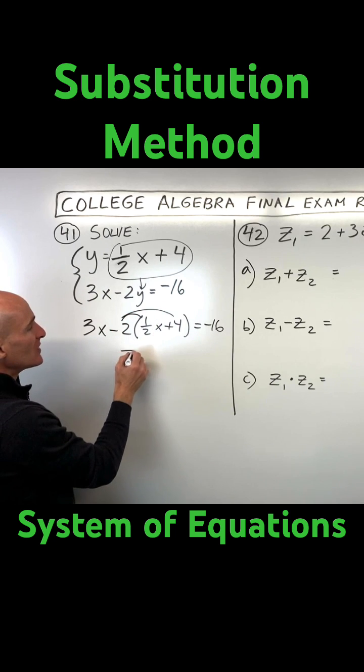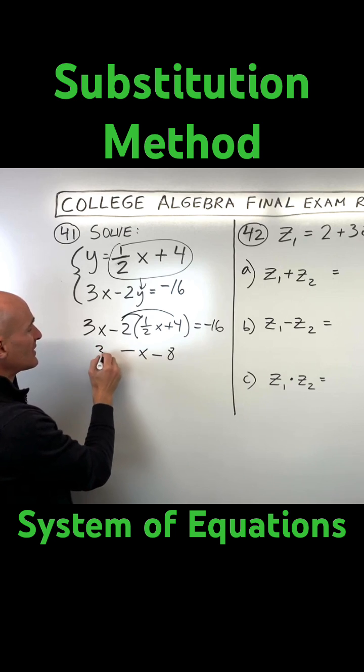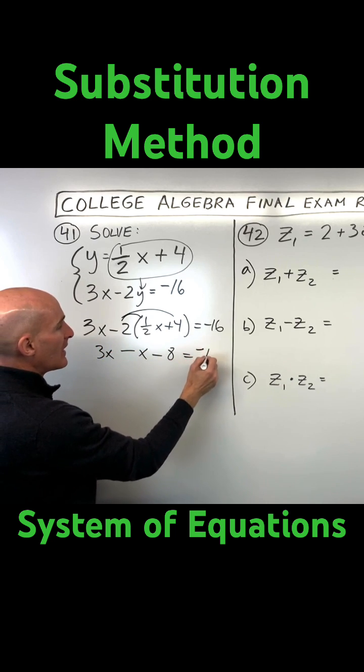So if we distribute, we get negative x minus 8, bring down the 3x, and now we can solve.